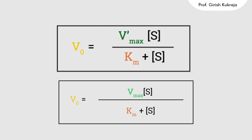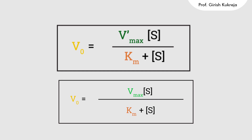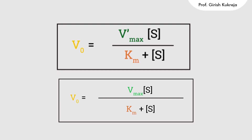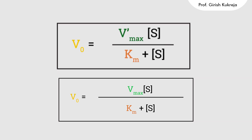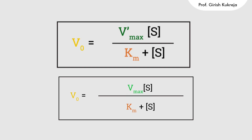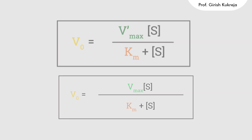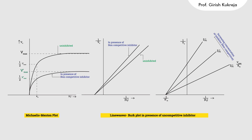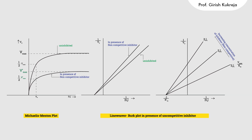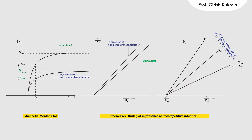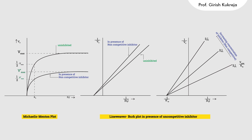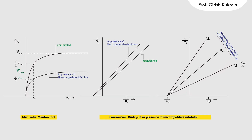Comparing it with the normal Michaelis-Menten equation, we deduce that only the value of Vmax has changed, whereas the value of Km has remained the same. Graphically representing the effect of the non-competitive inhibitor, it is again clear that the value of Vmax decreases whereas the value of Km remains constant. Thank you.